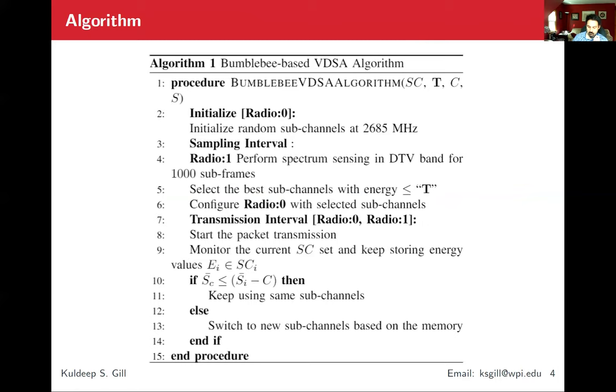In our algorithm, we are using two radios mounted on the same hardware. We have two daughter boards, which are SBX daughter boards, which work around 400 MHz to 4.4 GHz frequency range. One is used for spectrum sensing, the other is used for CV2X. We start by initializing radio zero, which is our CV2X at 2.685 GHz. That's the LTE band seven.